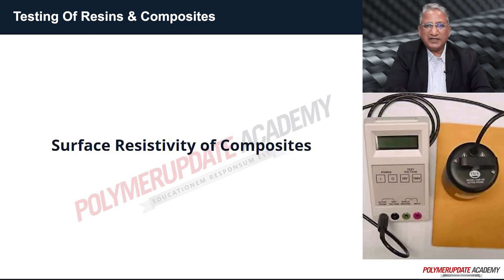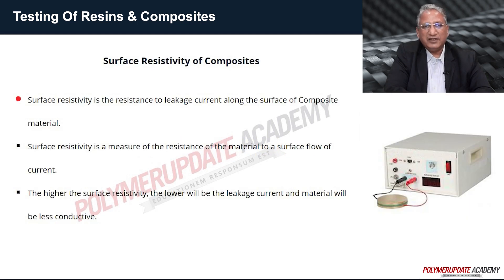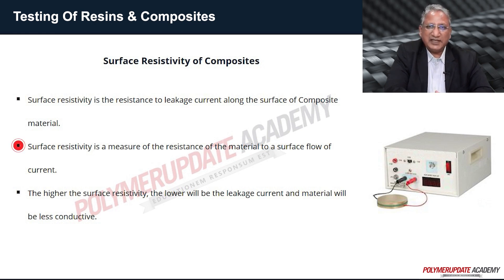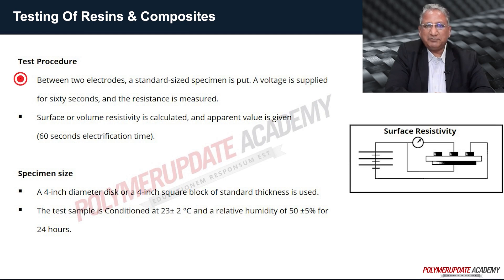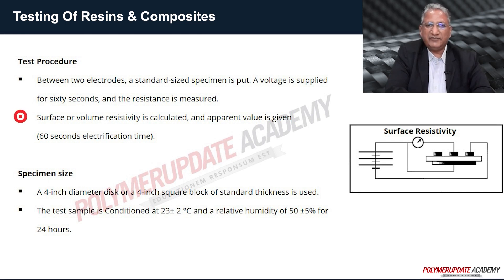The next important properties to be determined for composites are electrical properties. Surface resistivity is the resistance to leakage current along the surface of a composite material. If surface resistivity is higher, the leakage current will be lower and the material is considered less conductive. A standard size specimen is placed between two electrodes for 60 seconds, a voltage is applied, and the resistance is measured. Surface and volume resistivity are calculated and the apparent value at 60 seconds electrification time is given.